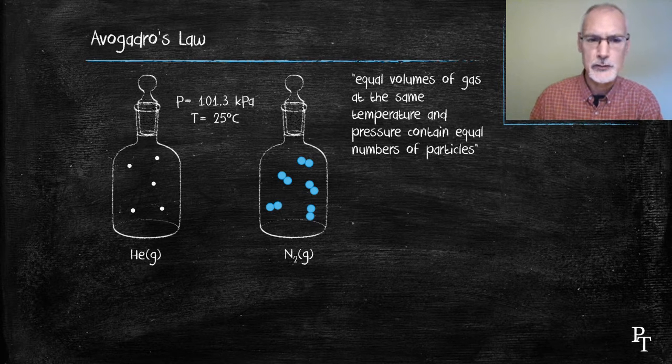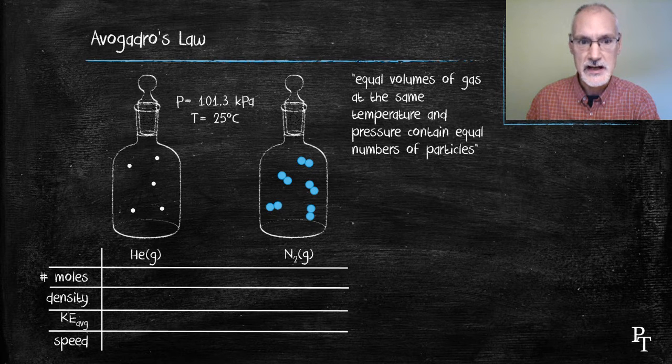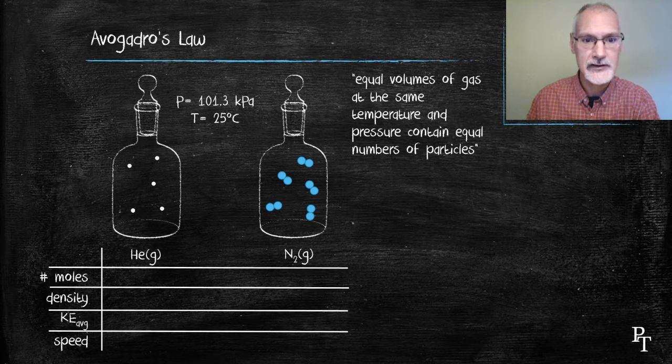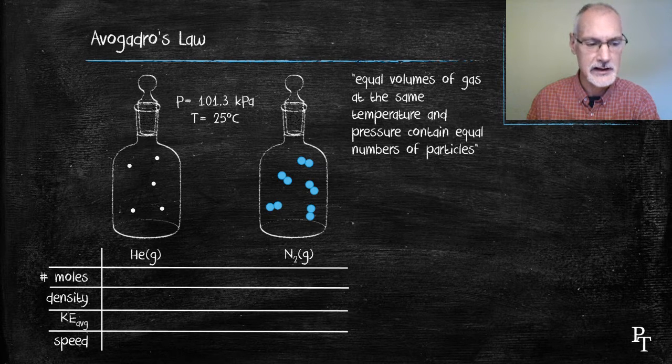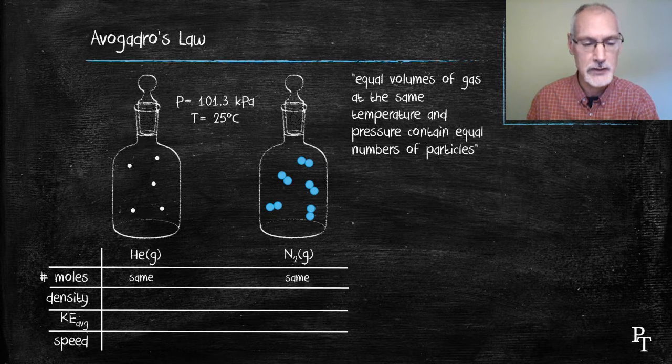I want to consider a few other properties of these gases. So the number of moles they each contain. To convert number of particles to moles we divide by Avogadro's number 6 times 10 to the minus 23. So both of these having the same number of particles would also have exactly the same number of moles of particles.